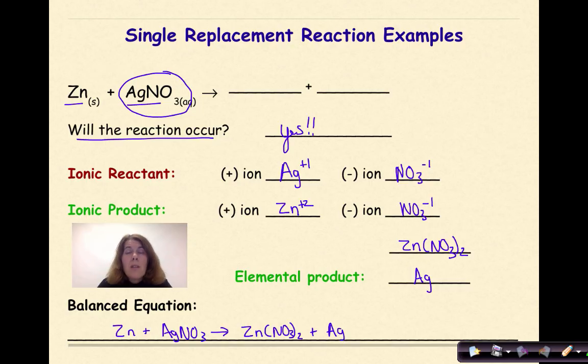Now the question is, is it balanced? And if you can look at it and you'd say no it's not because we can see that the polyatomic nitrate is not balanced. We have two NO3s on the product side. We need to get two NO3s on the reactant side.